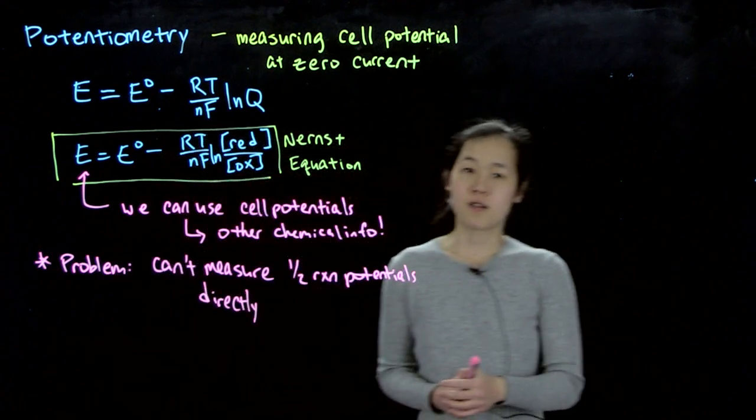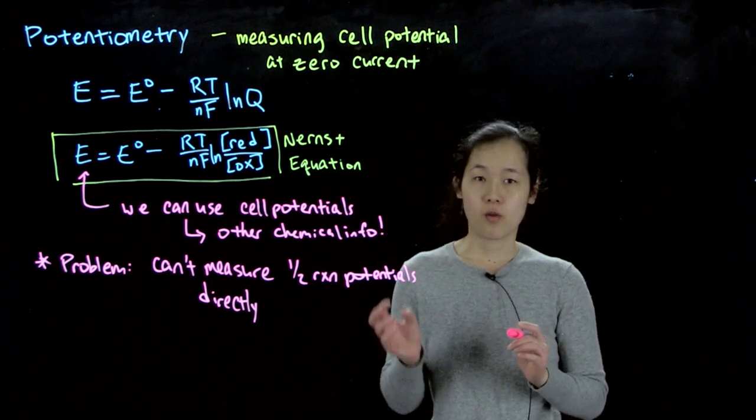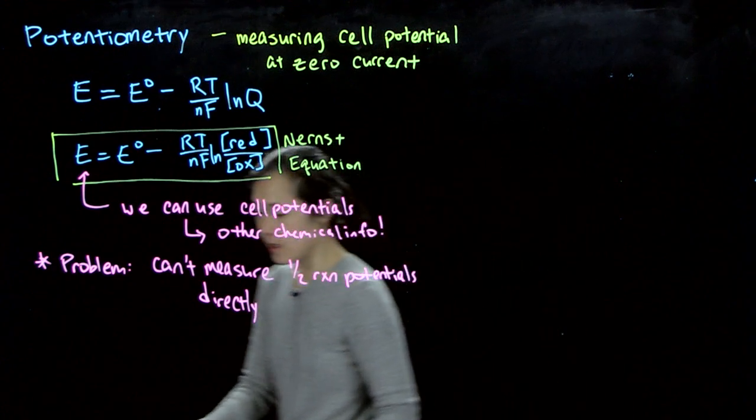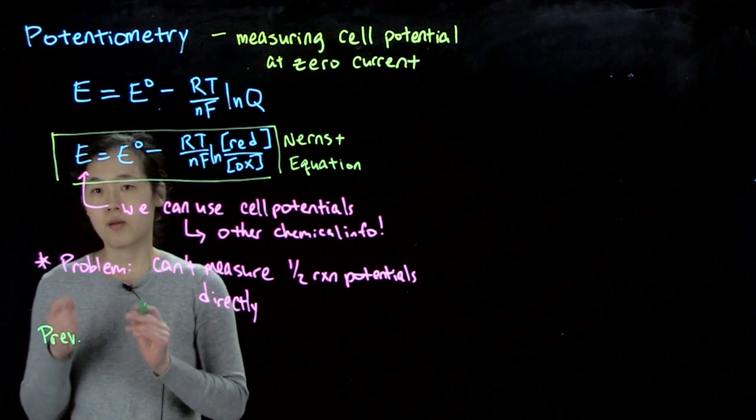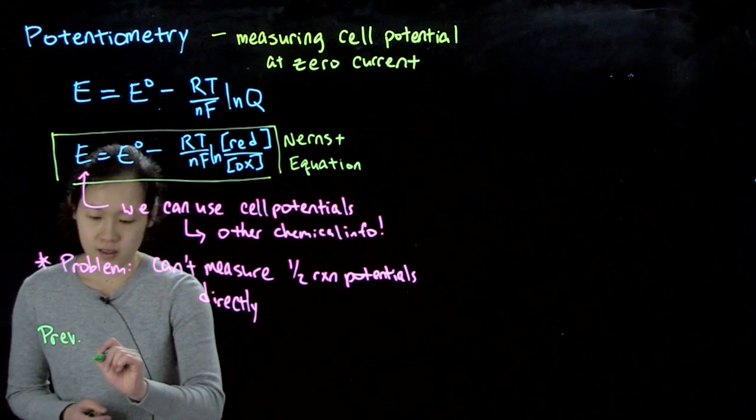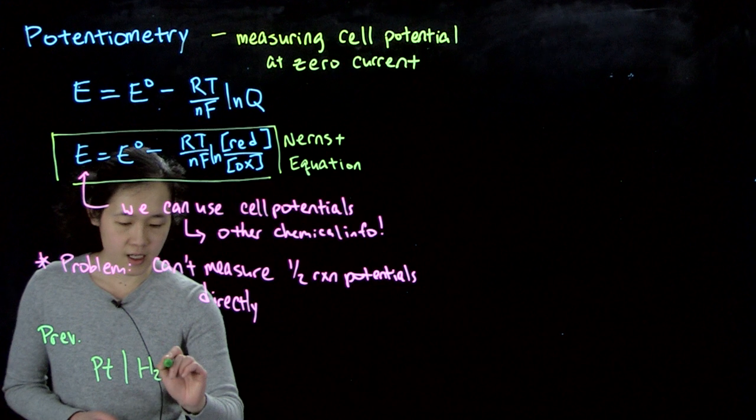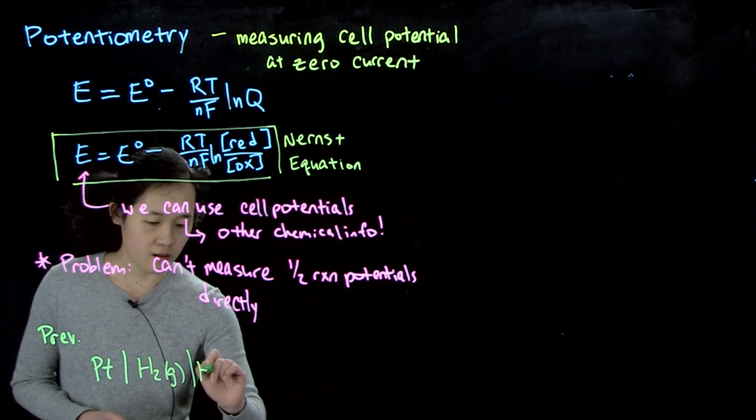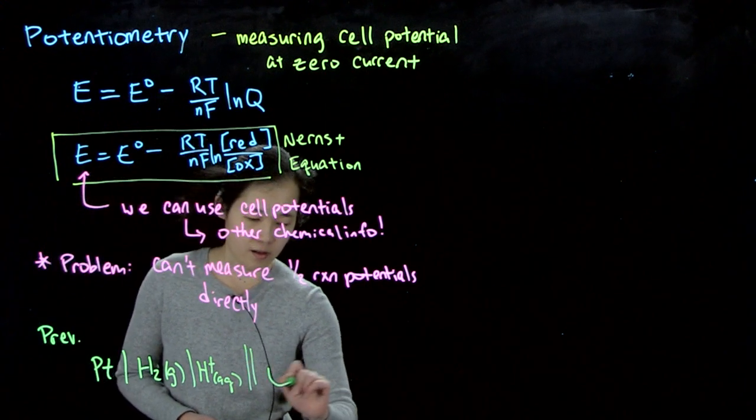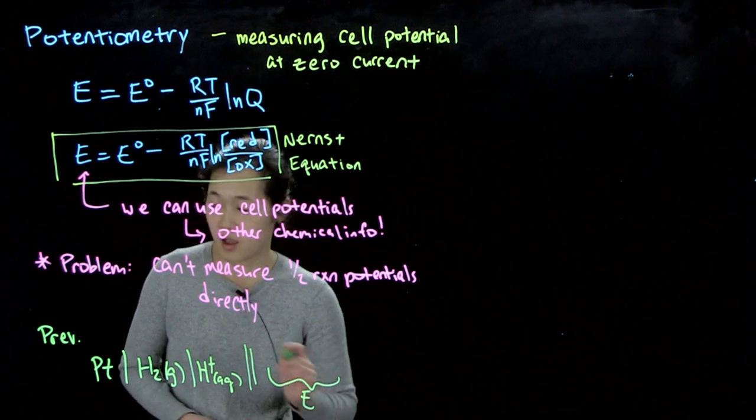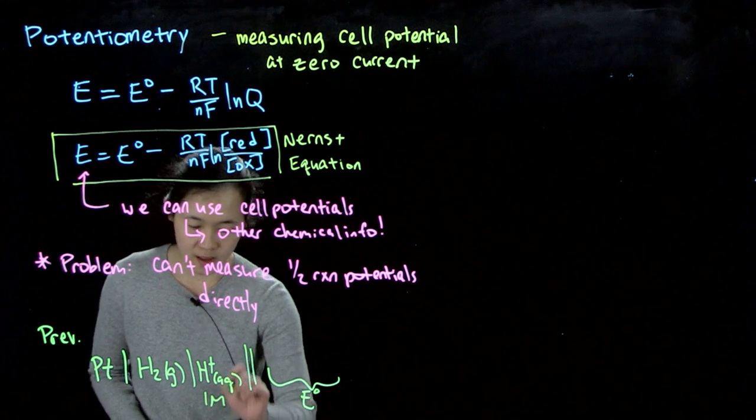So for the standard reduction potentials of the tables that we used before, the way we got around this is we measured, we had this reference electrode, which was a standard hydrogen electrode. And if you remember, so previously, we've used the hydrogen and protons at a platinum electrode. Hydrogen gas, protons, and then this was our whatever E. So this is what we've done to get the standard potentials, and this was one molar.